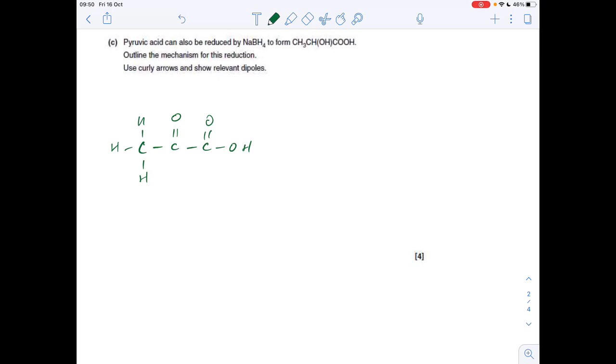The mechanism now for the reduction of the pyruvic acid to form this compound here. We're going to use H- to represent the reducing agent. Show any relevant dipoles, use curly arrows. So the relevant dipole is this one here on the carbonyl bond. We'll take a pair of electrons and take it from the lone pair on the H- ion to the carbon delta plus. And that will repel the pi electron pair onto the oxygen.